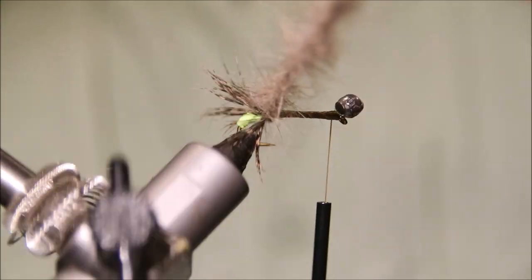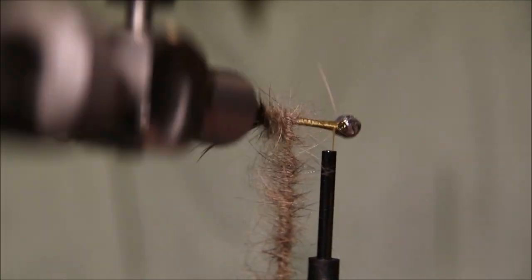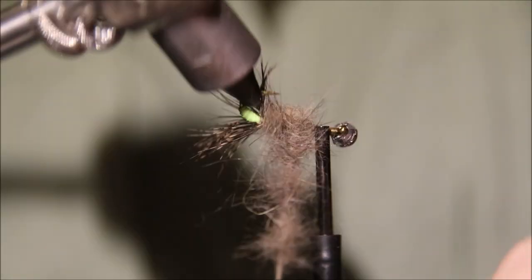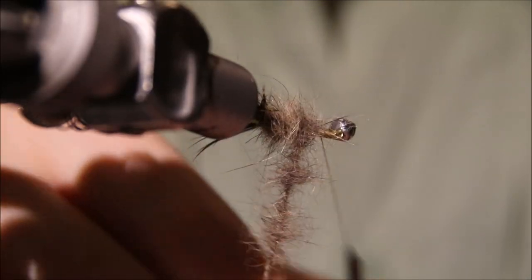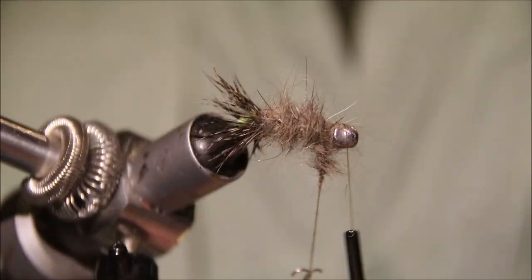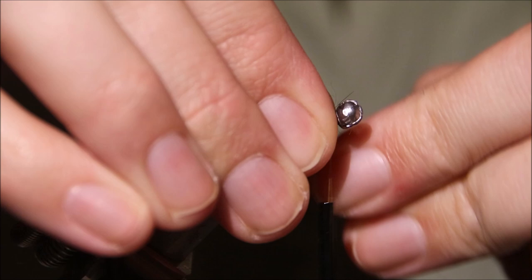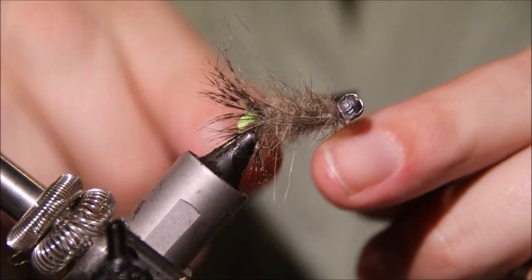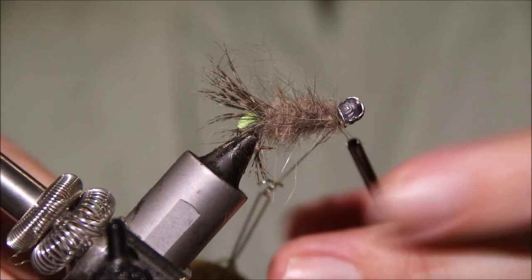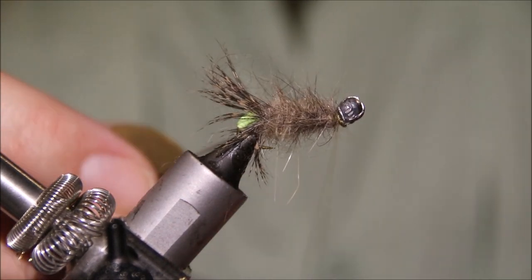Now I'm just going to use the rotary function of my vise here to wind this. But if you don't have it, you can just wind it hand over hand. I'm just building a fairly thick shaggy body, just letting it come all the way up to the shot. When I get there, catch it in, cross my thread, and again, just to lock that in for security.